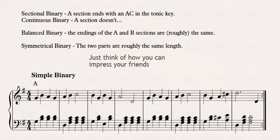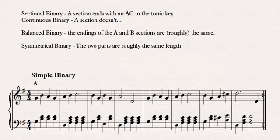So the first two go together: sectional and continuous binary. A sectional binary is one where the A section ends with an authentic cadence, whether it be a perfect authentic, which is more usual, or an imperfect authentic, in the tonic key, so the key of the whole piece. If it doesn't, then it's a continuous binary. So just look at the end of the A section. If it's got an authentic cadence in whatever key the piece started in, then it's sectional. If not, it's continuous.